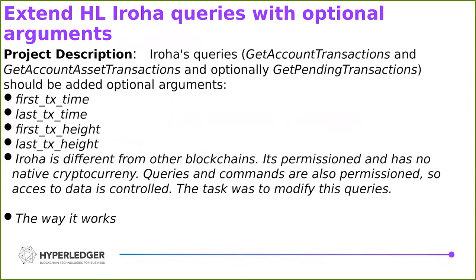IROHA queries — get account transactions and get account asset transactions — give us all the transactions of a specified user. In the first one we get all transactions, and in the second we get only those regarding a specified asset. There is also get pending transactions, where we can get all transactions that are still not accepted and not yet saved in the blockchain.